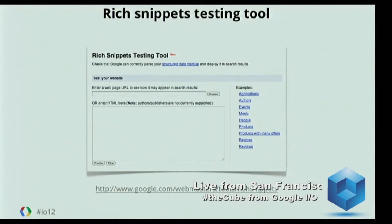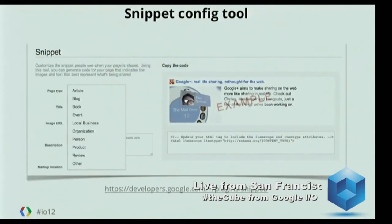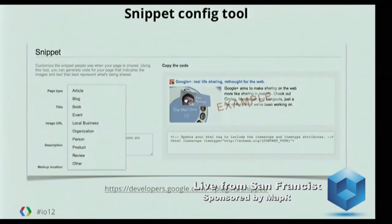The other thing we got when we spoke to people was they said it's not enough just to have rich snippets testing — I need help in creating my web page in the beginning. So we built this snippet config tool. As you can see, it has a dropdown where you can pick the most common entity types, put in your title or name, the URL, the description, and we'll show you what the markup will look like.